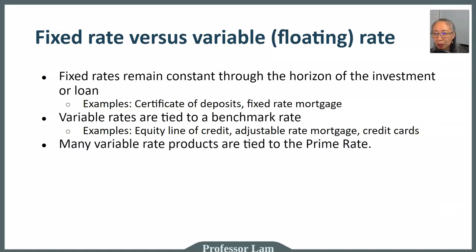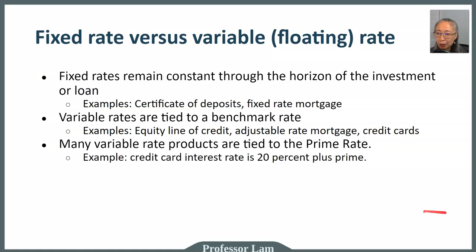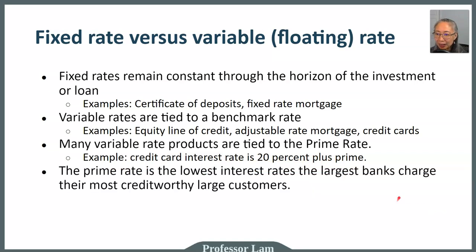The most common benchmark rate is called the prime rate — the interest rate that banks charge their most favored customers. Most variable rate products are quoted as prime plus a spread. For example, if a credit card interest rate is prime plus 20%, and the prime rate is 6%, then your credit card rate is 26%. The prime rate is the lowest rate the largest banks charge their largest customers, so typically consumers do not receive the prime rate.